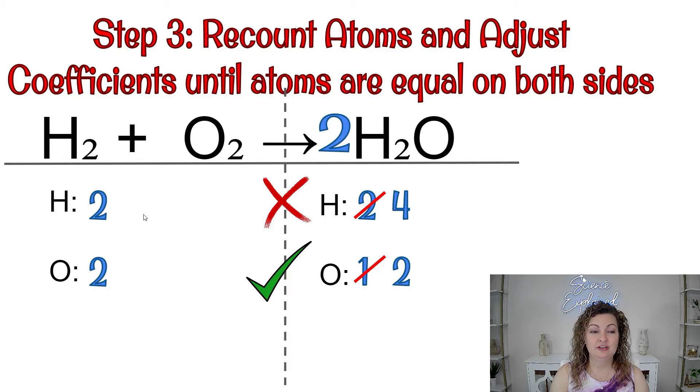So we need to focus on fixing our hydrogen now. I know this seems like a lot of back and forth, but that's okay. You're going to get there. We need to go to the side that has the least amount, right? So four is bigger than two, so we're going to go to the side with the least, which is two, and we need to make it a four.